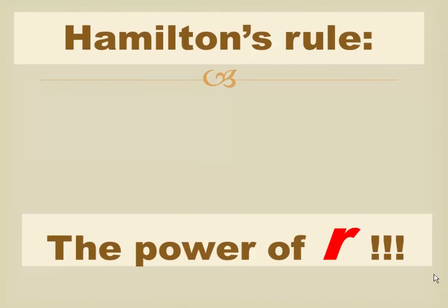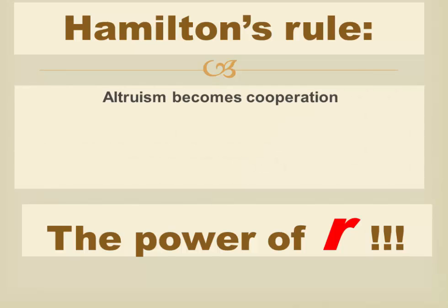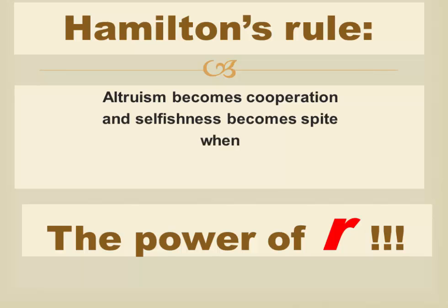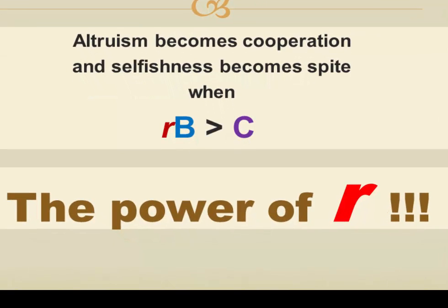So Hamilton's Rule, as we've discussed it, is all about what we call the power of R — the power of relatedness to transform altruism into cooperation and selfishness into spite. This is all based on the weight of relatedness against the benefit of an act as opposed to the cost.